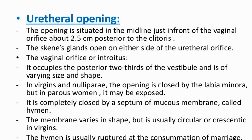The vaginal orifice occupies the posterior two-thirds of the vestibule and is of varying size and shape. In virgins and nulliparae, the opening is closed by the labia minora, but in parous women it may be exposed. It is completely closed by a septum of mucous membrane called the hymen. The hymen varies in shape but is usually circular or crescentic in virgins, and is usually ruptured at the time of first intercourse.